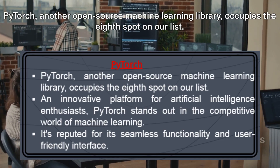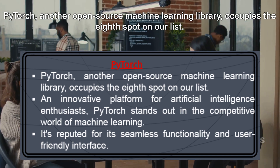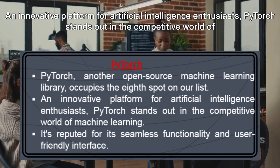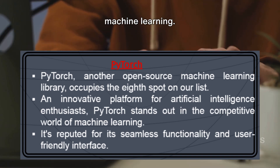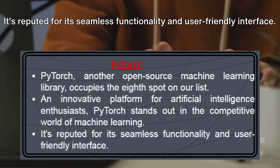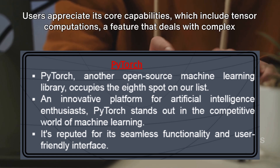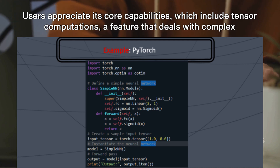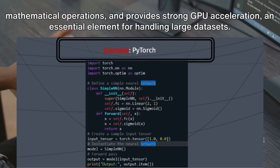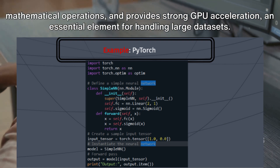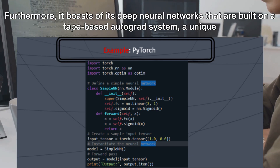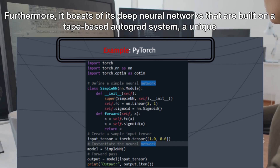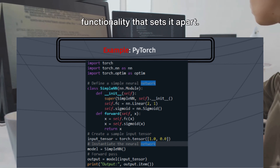PyTorch, another open-source machine learning library, occupies the eighth spot on our list. An innovative platform for artificial intelligence enthusiasts, PyTorch stands out for its seamless functionality and user-friendly interface. Its core capabilities include tensor computations — dealing with complex mathematical operations with strong GPU acceleration, essential for handling large datasets — as well as deep neural networks built on a tape-based Autograd system, a unique functionality that sets it apart.